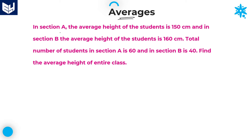In section A, the average height of the students is 150 centimeters, and in section B, the average height of students is 160 centimeters. The total number of students in section A is 60 and in section B, 40. The total strength is given in both sections, as well as the average height of each section. The question is: find the average height of the entire class.